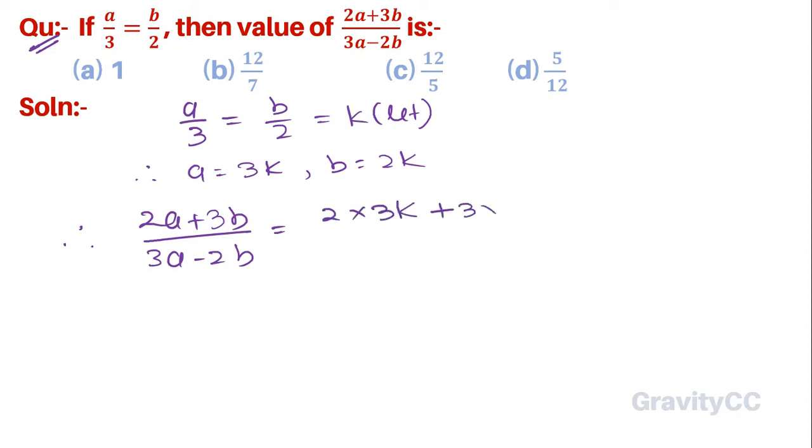This equals (6k + 6k)/(9k - 4k), which is 12k/5k.